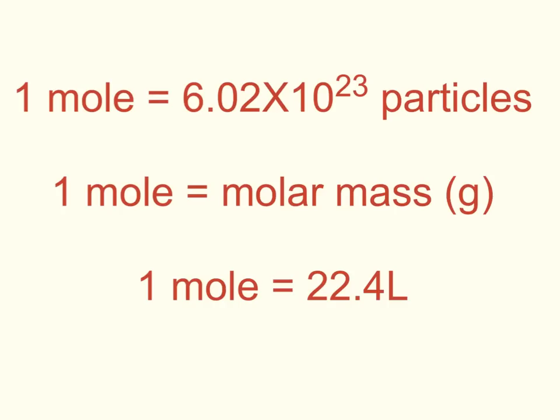So this is a review of the three conversion factors that we've been using throughout this chapter. One mole equals 6.02 times 10 to the 23rd particles. And remember that particles can be atoms or molecules or formula units. One mole also equals the molar mass in grams. And one mole equals 22.4 liters. Pay particular attention to the fact that one is always associated with the unit mole. The only time we use other numbers is when we're dealing with other units, such as particles, grams, and liters.